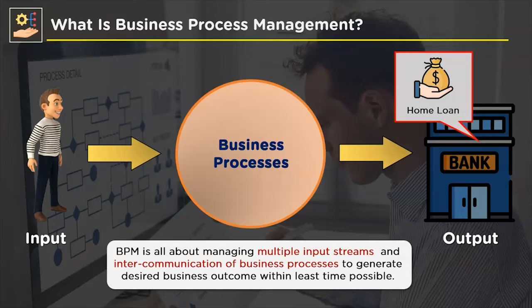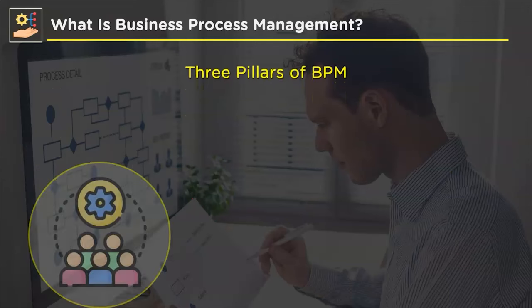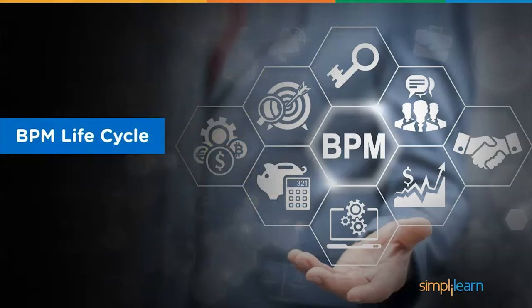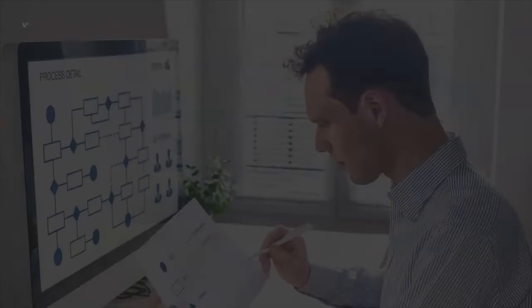Consider all these processes altogether — each works on the feedback of another process or some new input. Managing every input and process increases the speed of business operations by removing miscommunications, service delays, and customer complaints. BPM is the field of management that works toward achieving exactly that. In short, BPM is about managing multiple input streams and the intercommunication of business processes to generate the desired business outcome in the least amount of time. BPM comprises three main pillars: people, processes, and technology, all of which must work hand-in-hand for a BPM project to be successful.